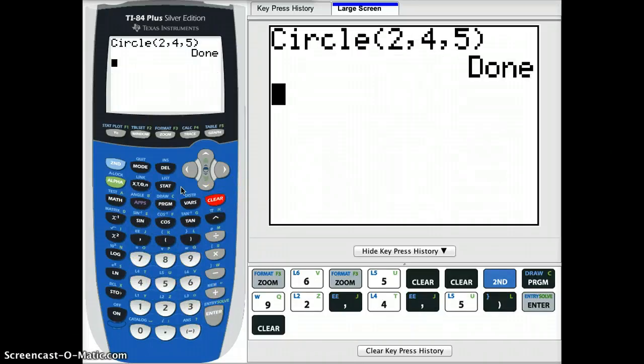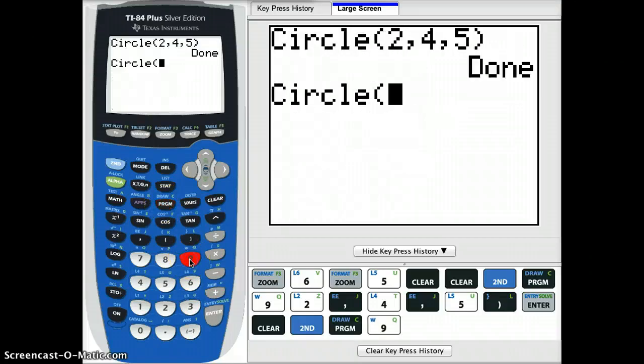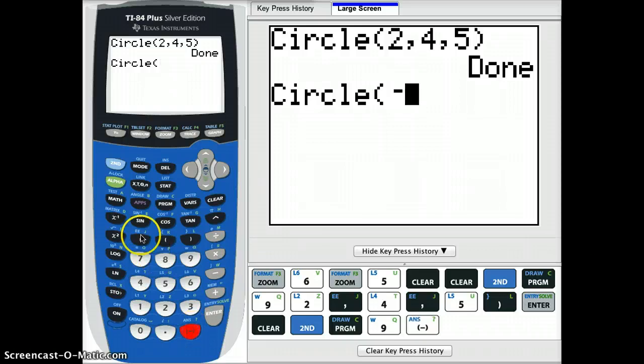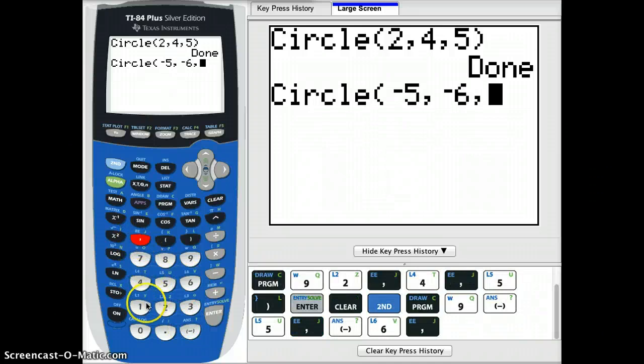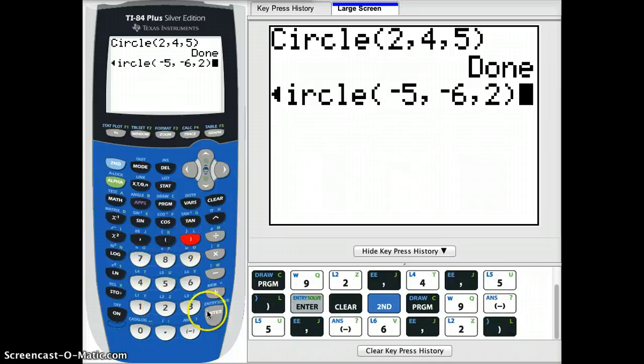Again, from the home screen, 2nd program, number 9. This time I'll do a circle down in quadrant 3 at negative 5 comma negative 6. And we'll make this a small one with just a radius of 2 units. And press enter.